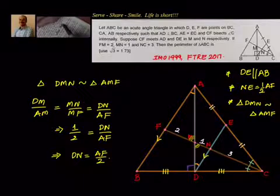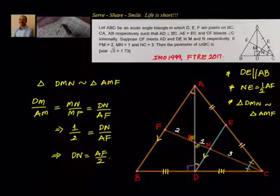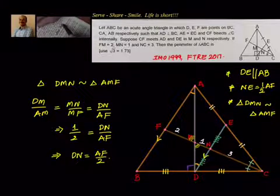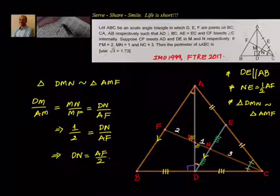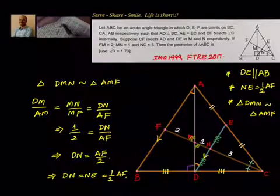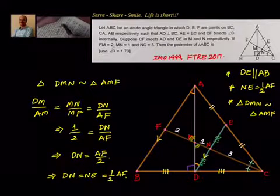Earlier we proved NE equal to half of AF, and now we got DN equal to half of AF. So both together give DN equal to NE equal to half of AF. Going back to the angle bisector theorem equation, CE divided by CD equals EN divided by DN, which equals 1. That means CE equal to CD.